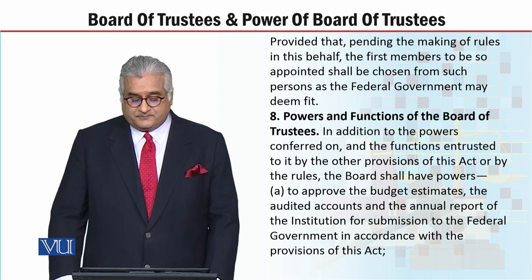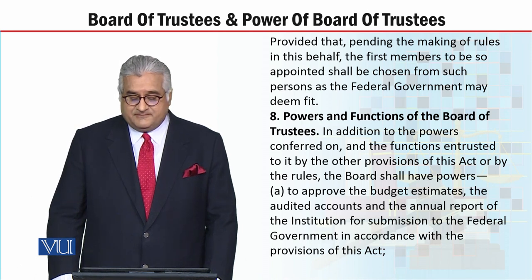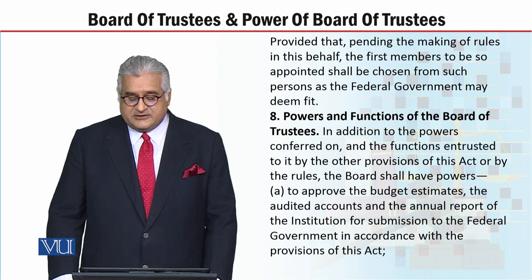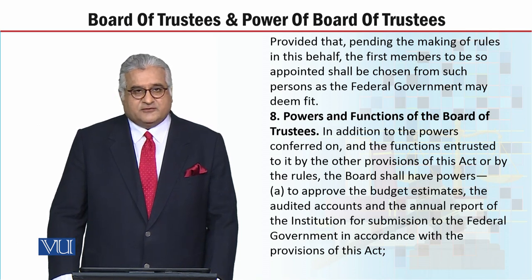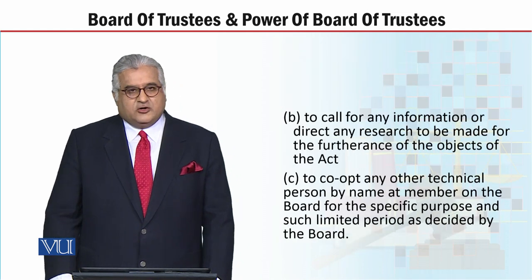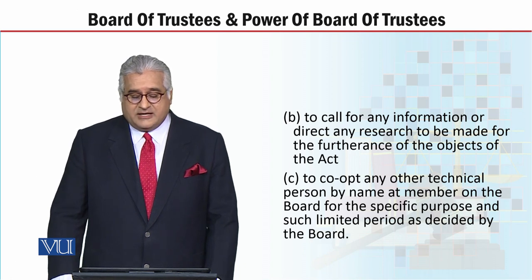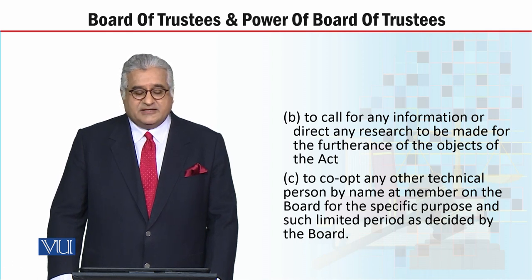Board of Trustees کے پاس پہلی power ہے: to approve the budget estimates, to approve the audited accounts, to approve the annual report of the institution for submission to the Federal Government in accordance with the provisions of this Act. Next power: to call for any information or direct any research to be made for the furtherance of the object of the Act.